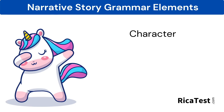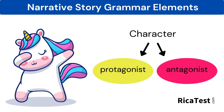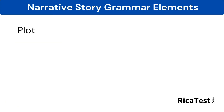The first element of story grammar is the character, who the story revolves around and follows. Teachers need to teach children to identify the protagonist, which is the main good character, and also the antagonist, who is the challenging character.